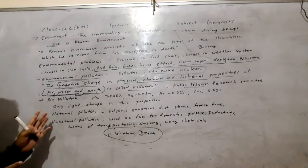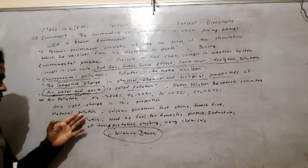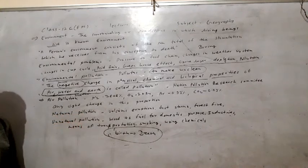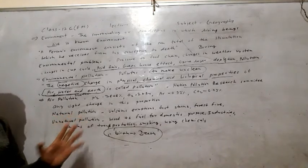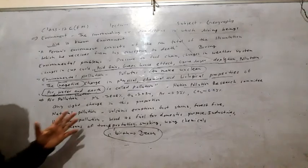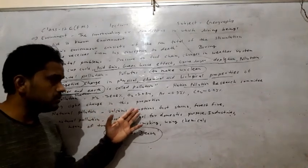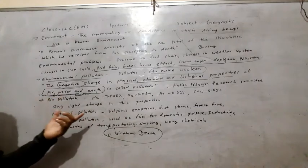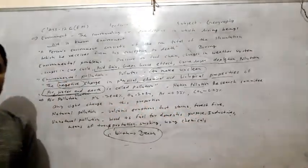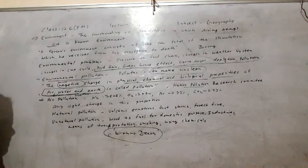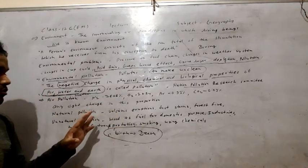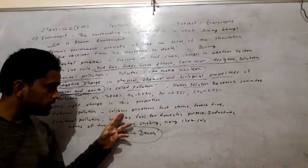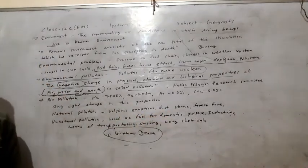We can classify air pollution into natural pollution and unnatural pollution according to sources. For natural pollution, volcanic eruption, dust storms, and forest fires are responsible for pollution. Here the human has no role — only nature has a role — in volcanic eruptions, dust storms, and forest fires.